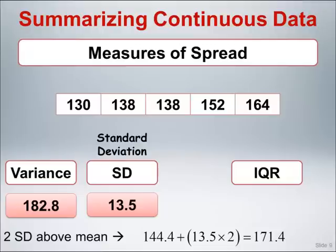We can, for example, talk about being two standard deviations above the mean. Here the mean value is 144.4. The standard deviation is 13.5. Thus, two standard deviations above the mean would be 144.4 plus 2 times 13.5, which equals a pressure of 171.4.